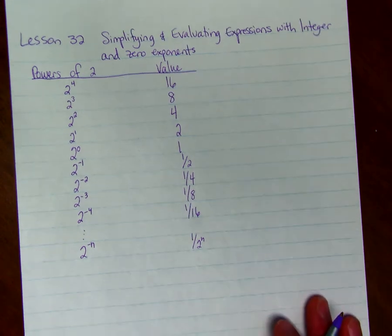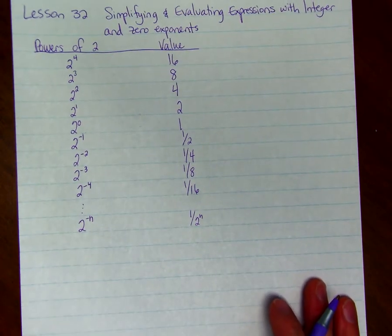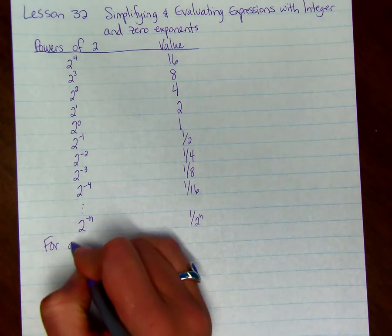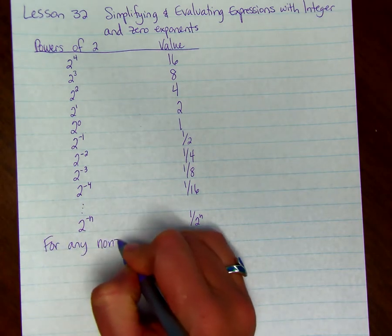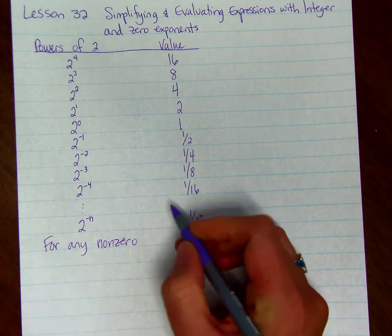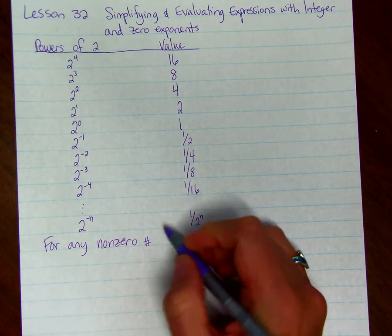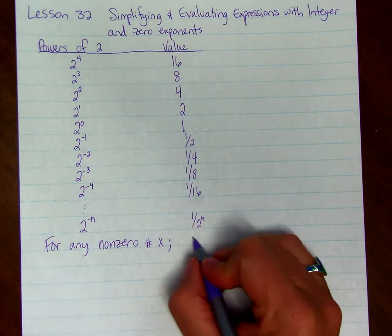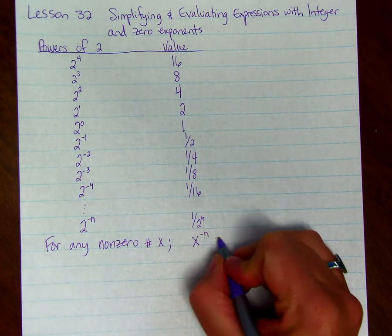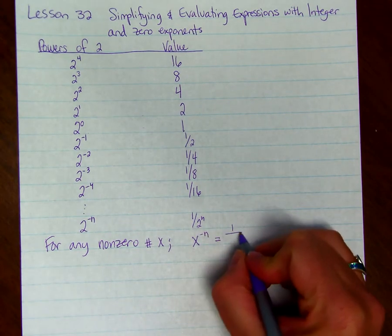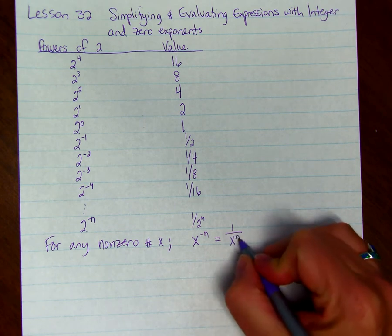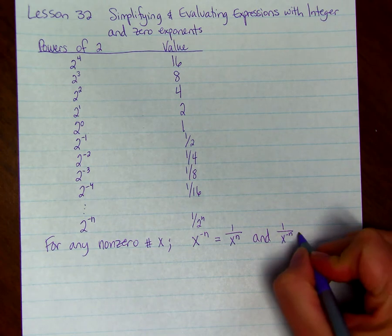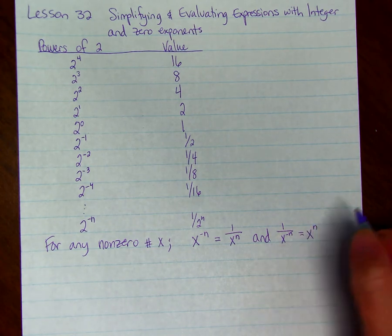So there is a rule for negative exponents. For any non-zero number x, so we want our x to be not zero, x to the negative n is going to equal 1 over x to the n. And we could say that 1 over x to the negative n equals x to the n.